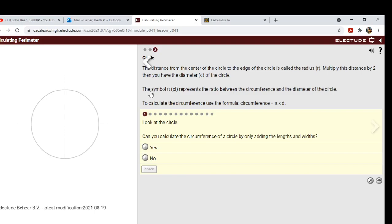The symbol pi represents the ratio between the circumference and the diameter of the circle. To calculate the circumference, use the formula: circumference equals pi times diameter.